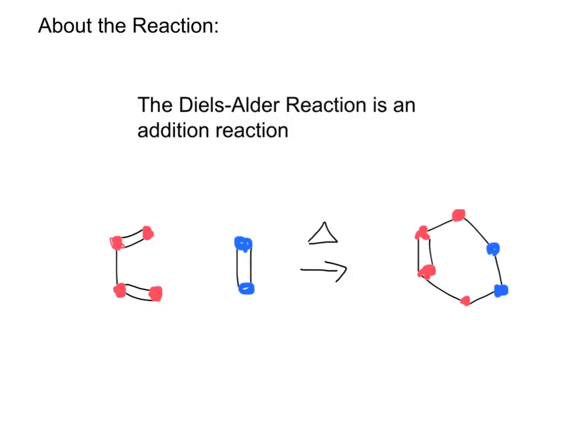About the reaction: the Diels-Alder reaction is an addition reaction named from the German chemists Otto Diels and Kurt Alder. They actually received the 1950 Nobel Prize in Chemistry for this.